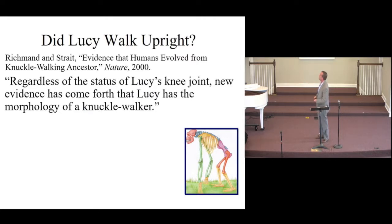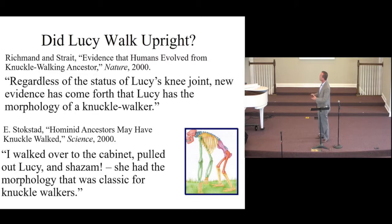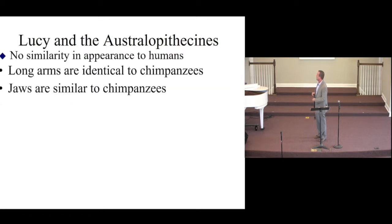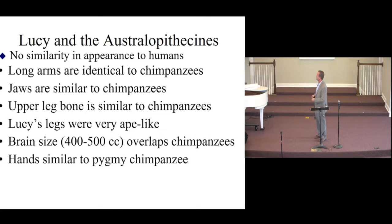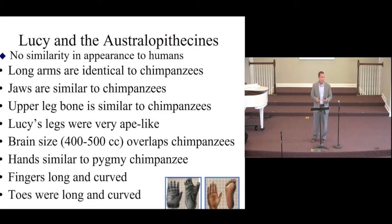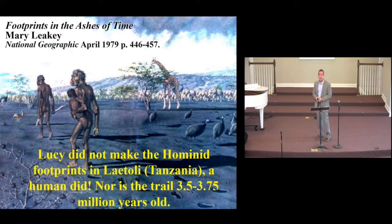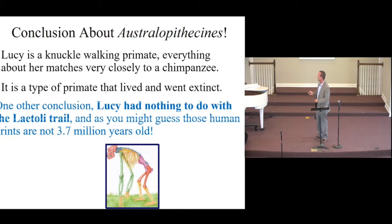Richmond and Strait: regardless of the status of Lucy's knee joint, new evidence has come forth that Lucy has the morphology of a knuckle walker. Stockstad: 'I walked over to the cabinet, pulled out Lucy, and she had the morphology that was classic for knuckle walkers.' Oxnard: 'The australopithecines known over the last several decades are now irrevocably removed from a place in the evolution of hemo-bipedalism.' Her hands, her feet, her brain — nothing in line with the human brain. She is a chimpanzee-like creature that went extinct, and her hands and feet match exactly what we find in modern chimpanzees. Lucy is not the hominid that made that foot trail at Laetoli. Conclusion: she was a knuckle walker, and she didn't make the trail.